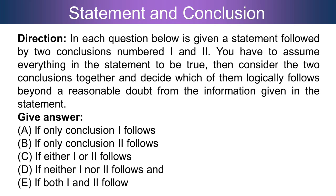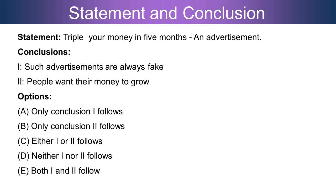Directions: In each question, a statement is given followed by two conclusions numbered one and two. Assume everything in the statement to be true, then decide which conclusion logically follows beyond a reasonable doubt. Answer A if only conclusion one follows, B if only conclusion two follows, C if either one or two follows, D if neither follows, and E if both follow.